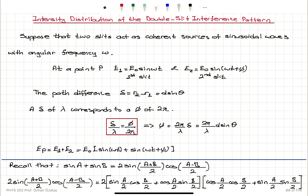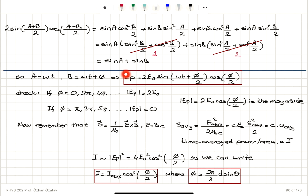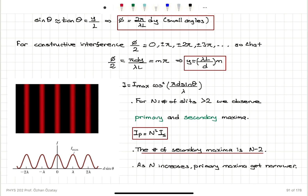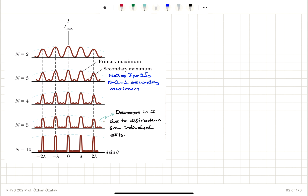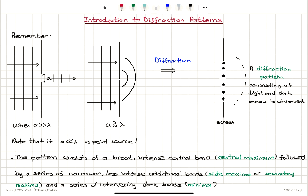In Young's double slit experiment, instead of adding phasors, we looked at the algebraic sum of two electric field components and used a trigonometric identity to find that the total electric field is 2E₀ cos(φ/2) multiplied by an oscillating function. Because the Poynting vector (1/μ₀) E×B has an average value of E_max² / (2μ₀c), it is proportional to E_max², giving 4E₀² cos²(φ/2), where φ = (2π/λ) d sinθ. This had a distribution with no envelope — but in experiment we observed this envelope, which we couldn't explain at that point. Now we know: this envelope corresponds to the single slit diffraction from individual slits.